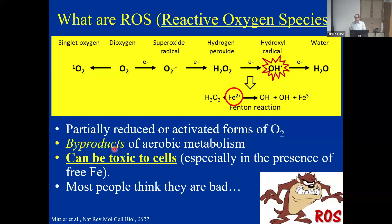Let's start talking about reactive oxygen species. I listed some of them here. They're partly reduced or activated forms of oxygen. They're byproducts of aerobic metabolism, and they can be toxic to cells, especially in the presence of iron. This is the famous—infamous—Fenton reaction. And most people think that ROS are bad.